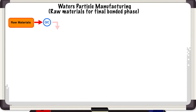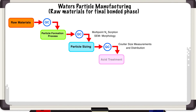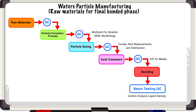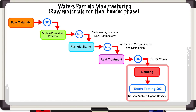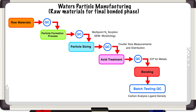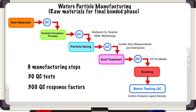What you have here is a series of steps to manufacture our bulk materials, and we QC test each step of the way. Just for a few examples: for the particle formation process we measure surface area, pore size, and pore volume. At the size level we take a particle size distribution measurement via coulter analysis. And at the bonded level we actually run percent carbon and pack that into a column for the chromatographic batch test. A product such as our Acuity product line, which has nine manufacturing steps, takes 30 QC tests along with 300 QC response factors.